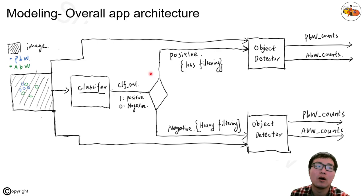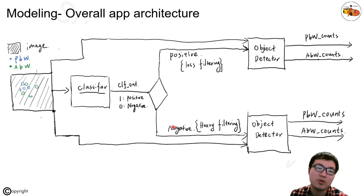Those thresholds are the parameters discussed in the overall app diagram. If the classifier determines an image is positive, we apply less filtering because we know there are objects. If the classifier determines it's a negative image, we apply heavy filtering — the classifier also tells you what percentage chance it thinks the image is negative, and based on that we filter out more boxes to produce fewer counts.